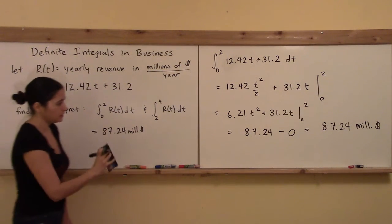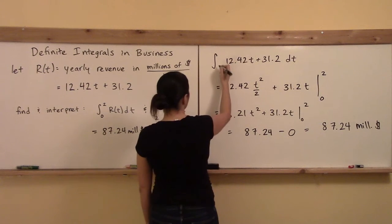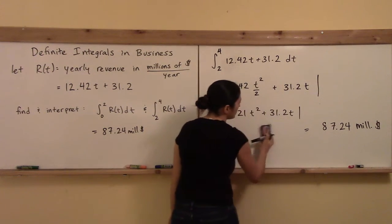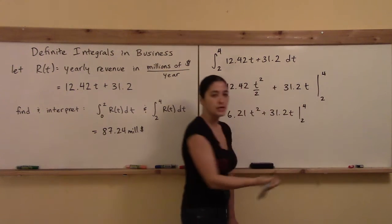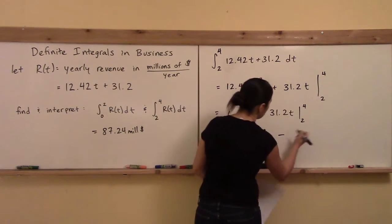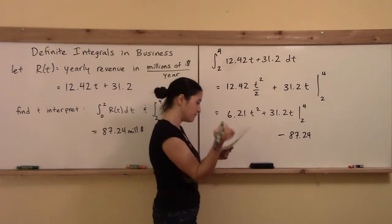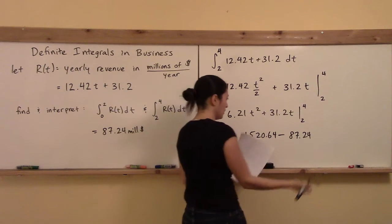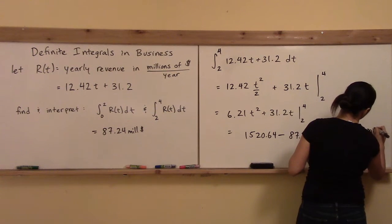For the other integral from 2 to 4, the indefinite integral doesn't change — we just change the bounds. Evaluating 6.21t² + 31.2t at t = 4 gives 1520.64, and we already know the evaluation at t = 2 was 87.24. Subtracting gives 1433.4 million dollars for the second two-year period.